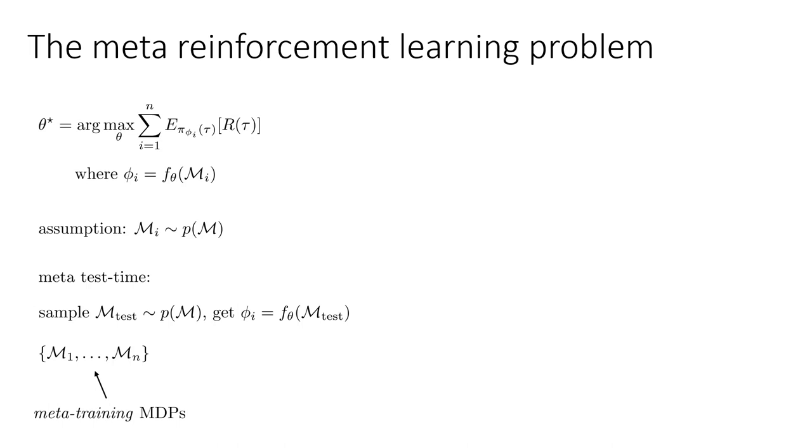It's important to assume that they come from the same distribution, because just like in supervised learning, learning only works when the training and test are from the same distribution. In meta-learning, it also only works when the training and test are from the same distribution.